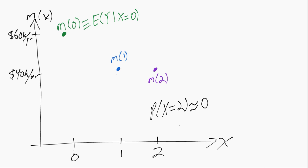So it'll drag that line up a little bit on the right side. But if there's very little weight on that point where X equals 2, the best linear approximation will still mostly fit the green and blue and not the purple. So it might look something like this.